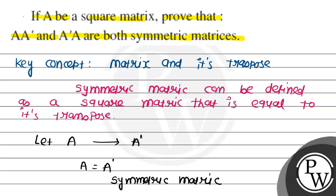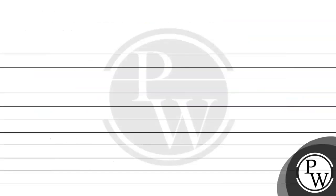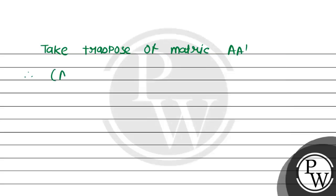So, here we need to prove that AA' and A'A are both symmetric matrices. For that, we need to take the transpose of the matrix. So, take transpose of matrix AA' — that is, (AA')'.